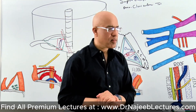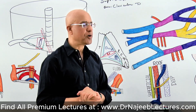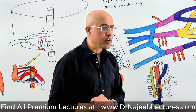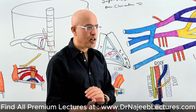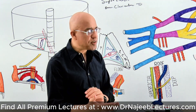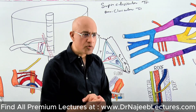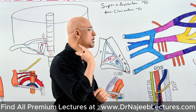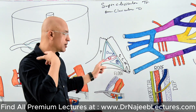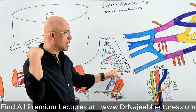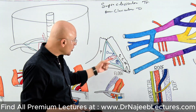If someone asks you where the subclavian triangle is, there are many ways to explain it. First, we must know what the posterior triangle of the neck is, because the subclavian triangle is a sub-triangle — a smaller triangle present within the posterior triangle of the neck. The posterior triangle of the neck is bounded by the sternocleidomastoid, trapezius, and clavicle.